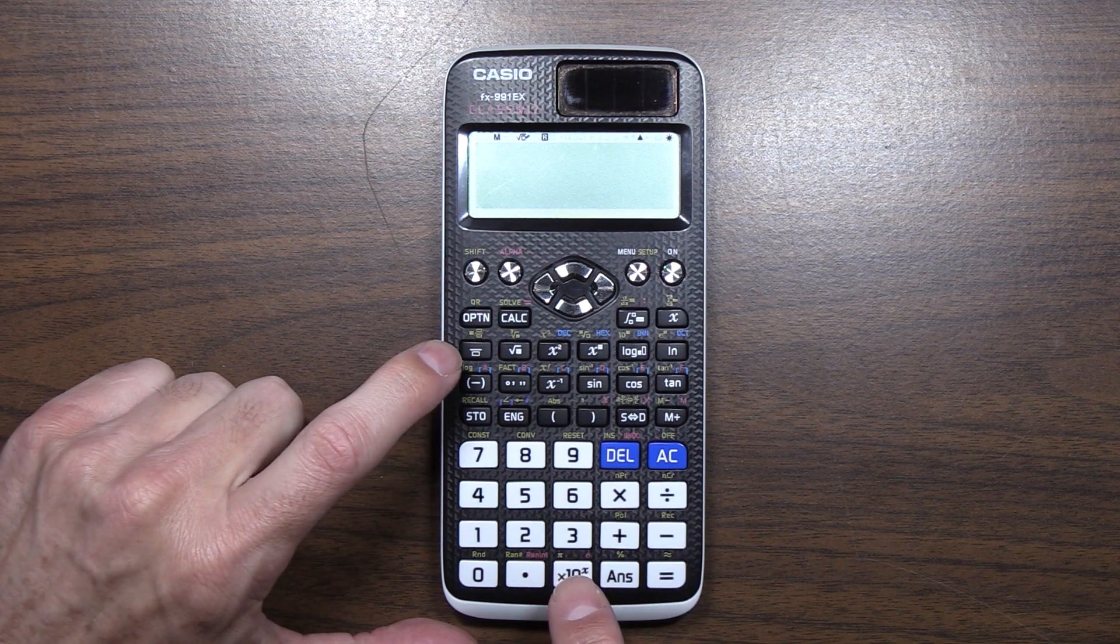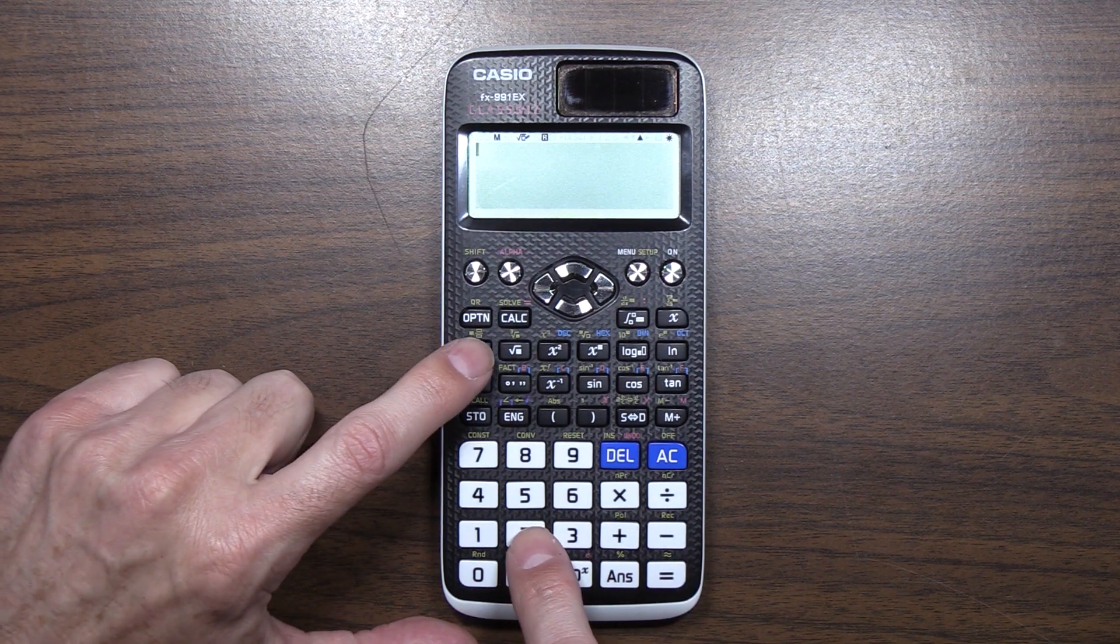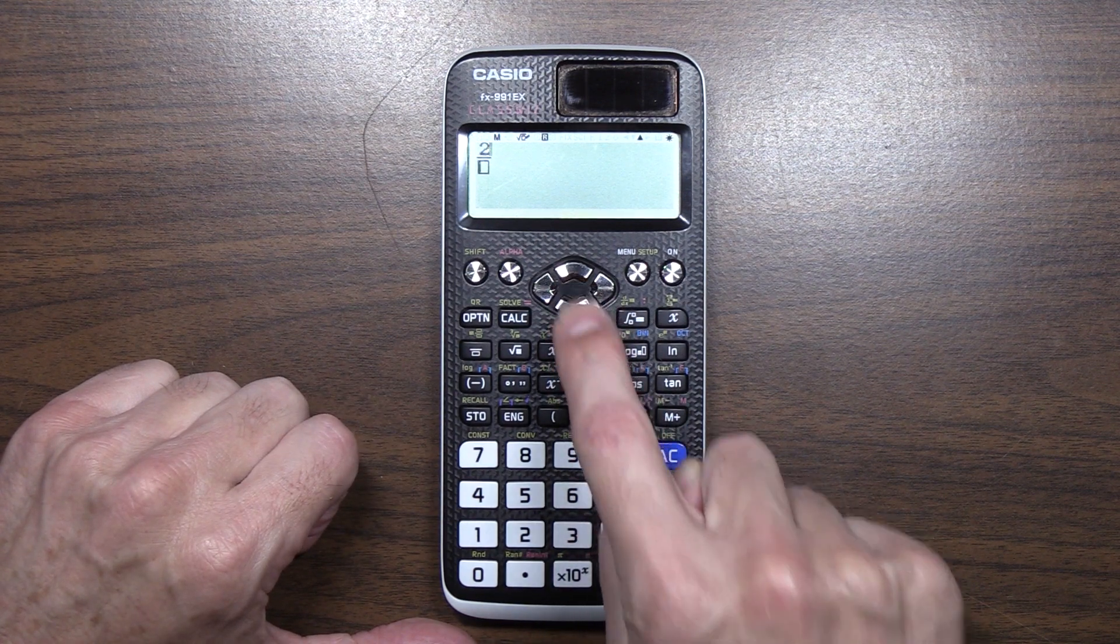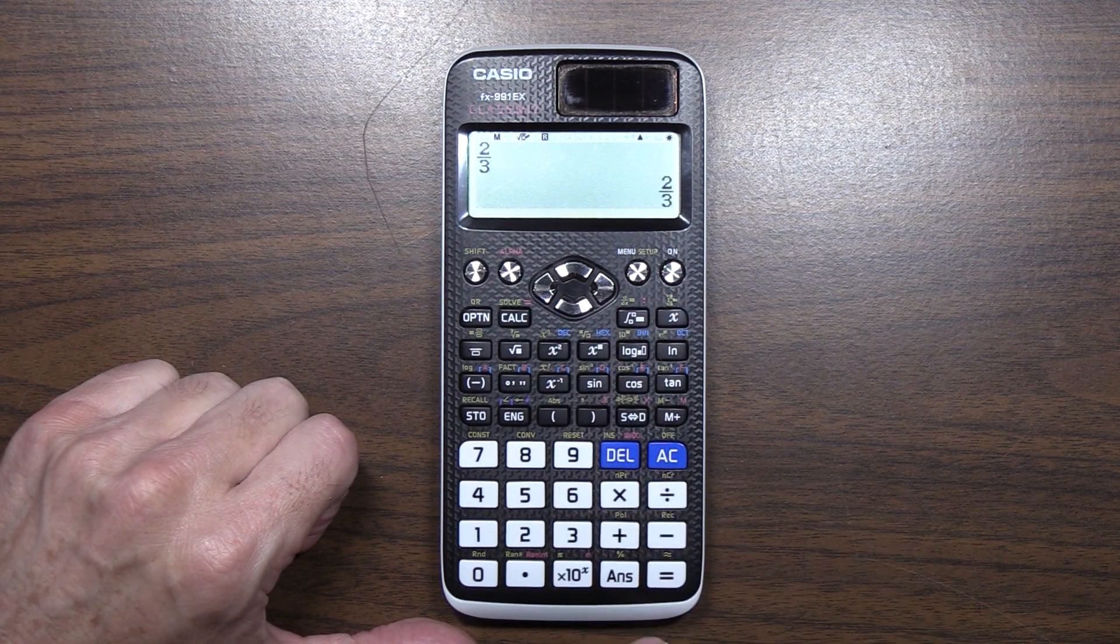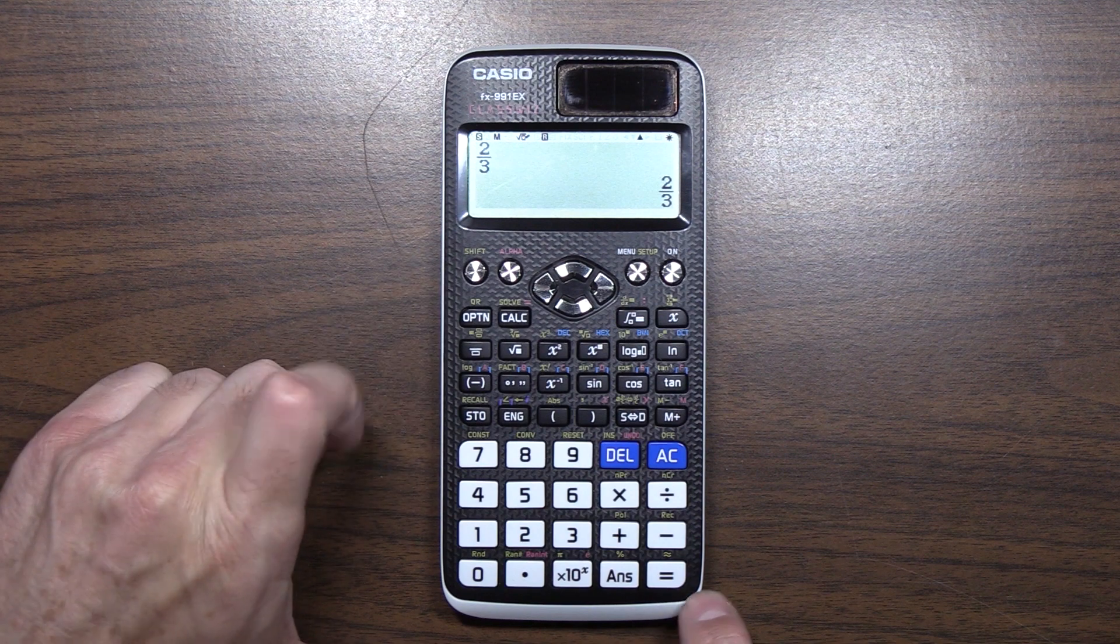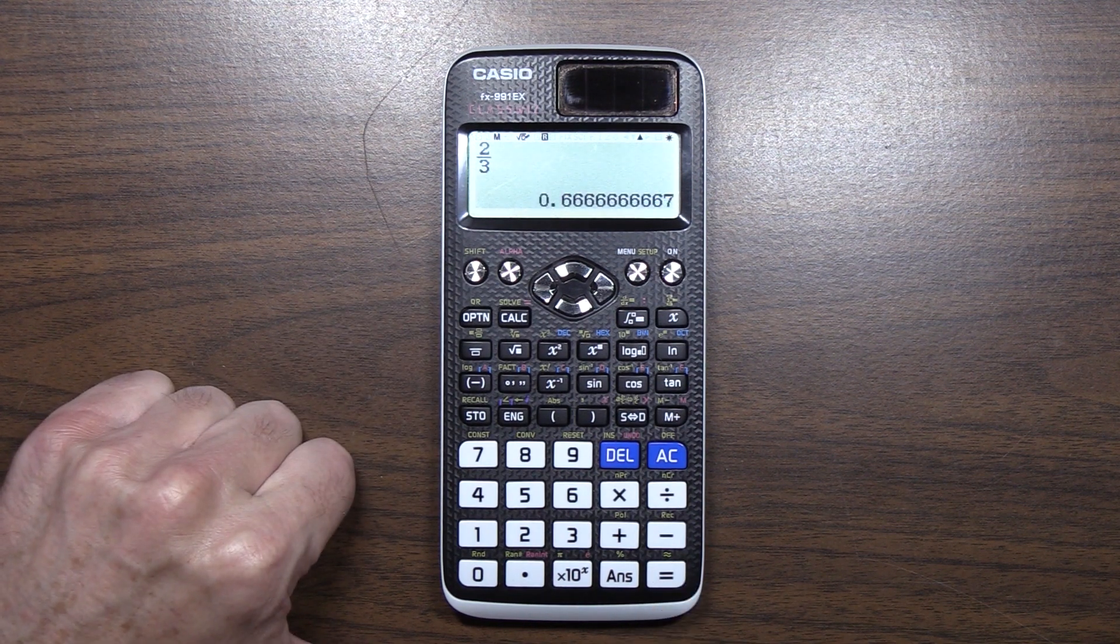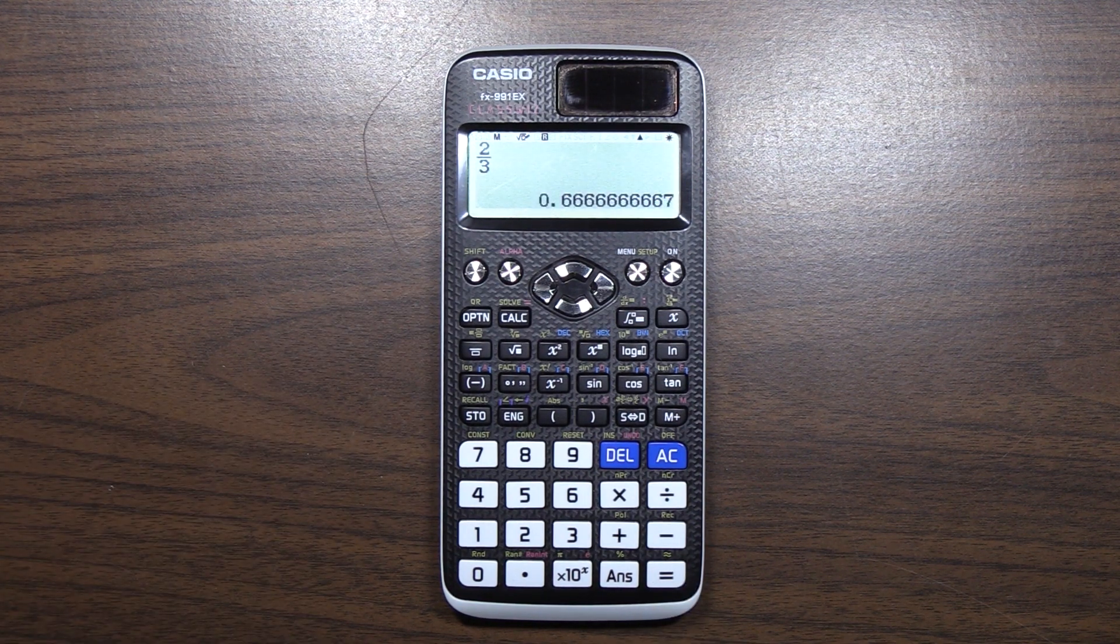So if you do like, let's just real quickly do this. If we had two thirds, and we wanted to know, hit equal, it's two thirds, but if I want to know what it's approximately equal to, I can do shift and equal, and I get the expected result.